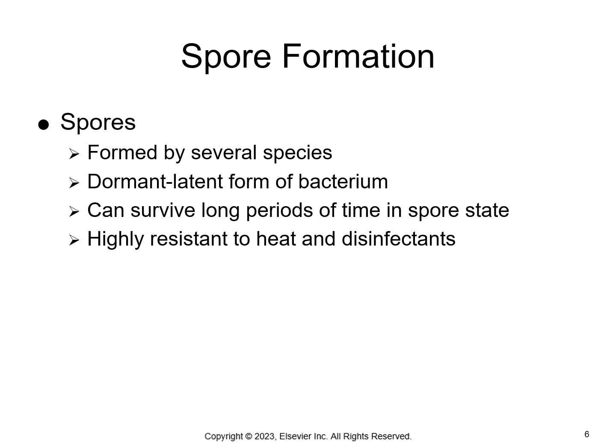Several types of bacteria can form spores. They're dormant or latent — they're kind of like asleep, just hanging out, not doing anything, but they can be activated at any time. They can live for a long time in that spore state, and they're very resistant to heat and disinfectants. Spores do not reproduce; they live in that spore state and can be returned to the vegetative state where they can reproduce and cause problems in the body.